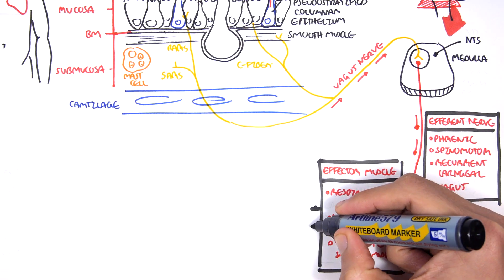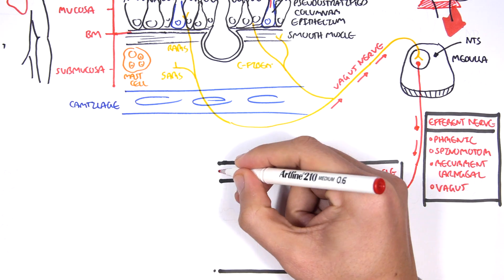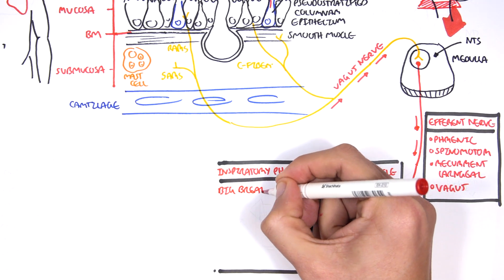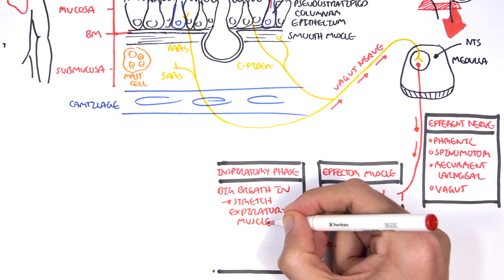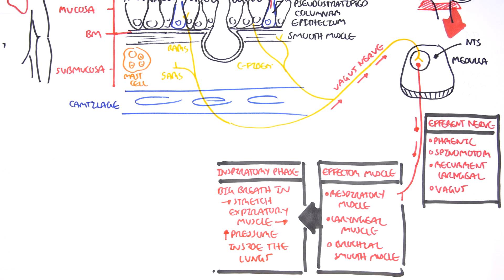When these efferent nerve fibers carry this information to these effector muscles, it will initiate the cough reflex. There are three main phases. Number one is the inspiratory phase. What happens here is we take a big breath in. It will stretch our expiratory muscles and increase the pressure within our lungs.